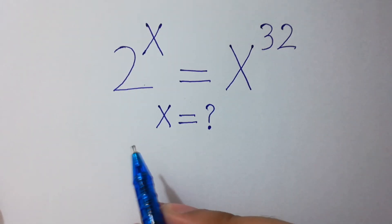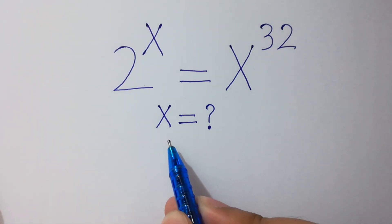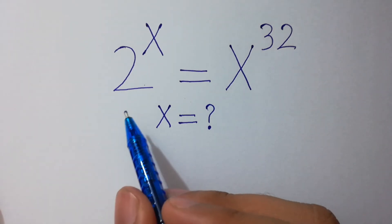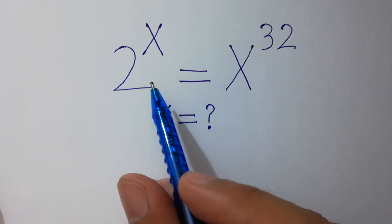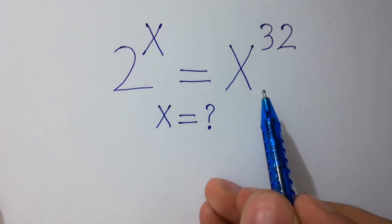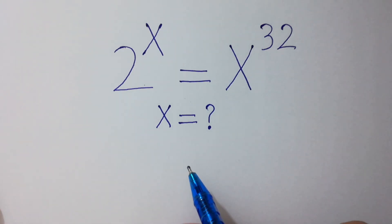Hello friends, can you find the value of x if 2 to the power x equals x to the power 32? Let's solve it.